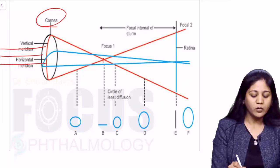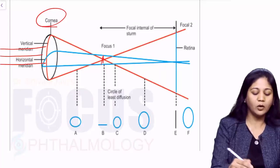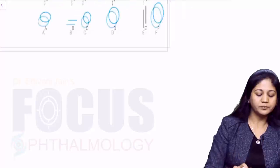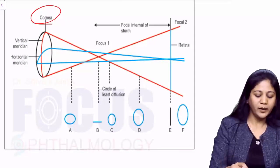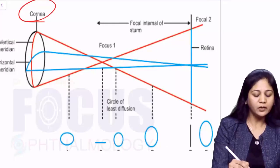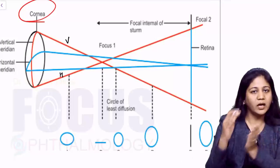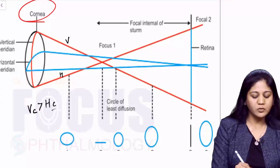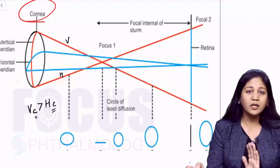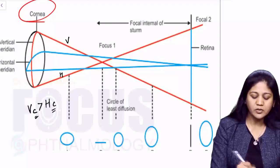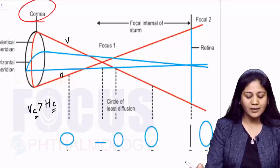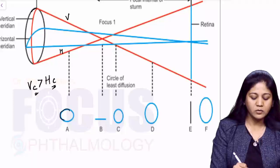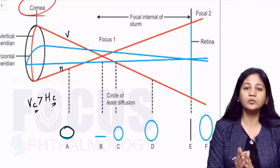At point A, the vertical rays and the horizontal rays are both converging, but the convergence of the vertical rays is much greater compared to the convergence of the horizontal rays — note that 'C' here refers to convergence, not curvature. Because the vertical rays converge more, the resulting image at point A will be a horizontal oval.